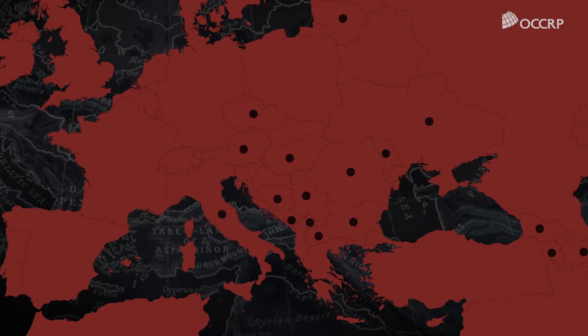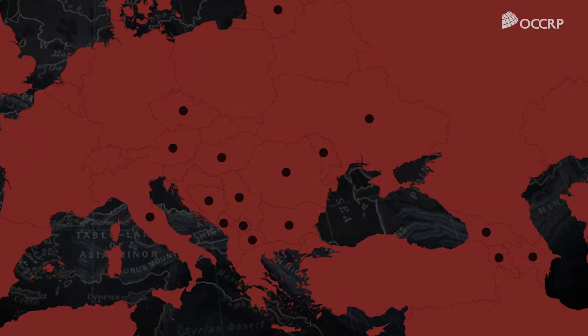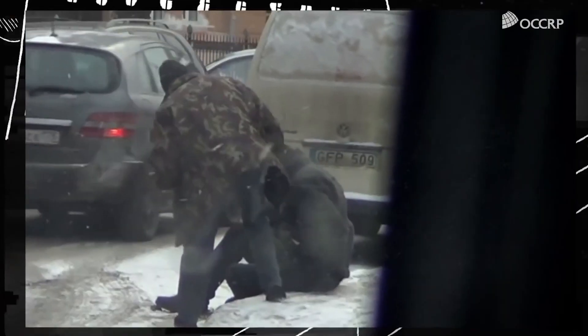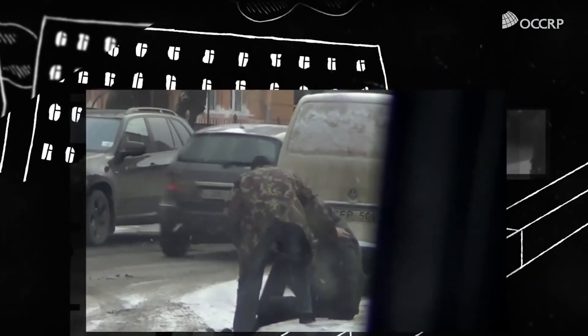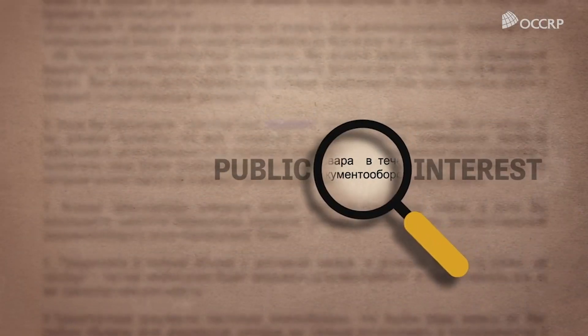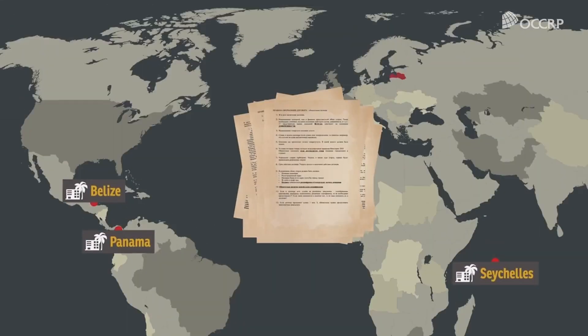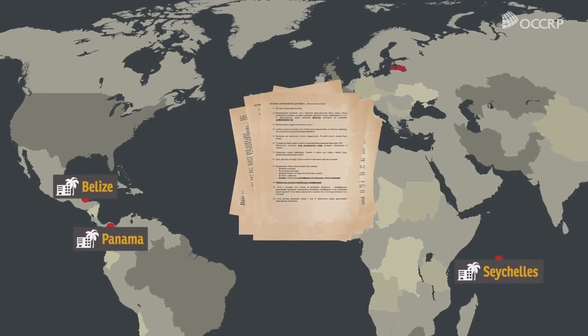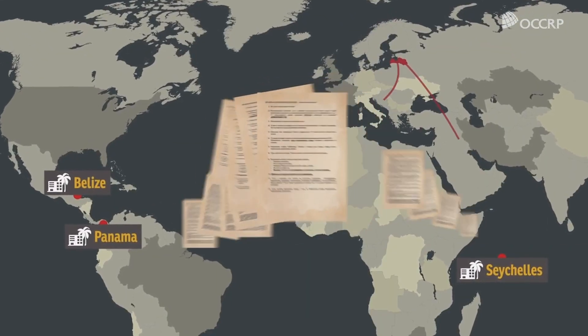At the Organized Crime Corruption Reporting Project, we have the largest network of investigative reporters across the world. We track organized crime, corruption, and basically the use of the illicit financial system of offshore finance and money laundering.